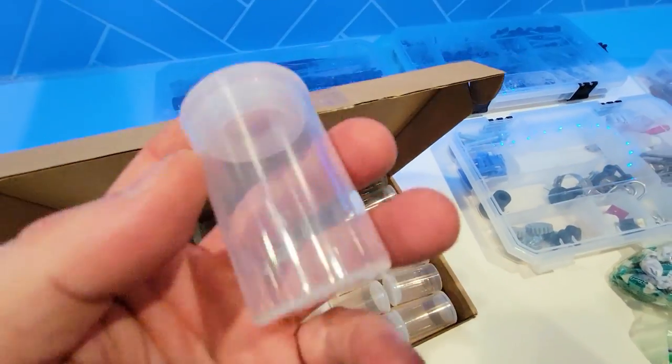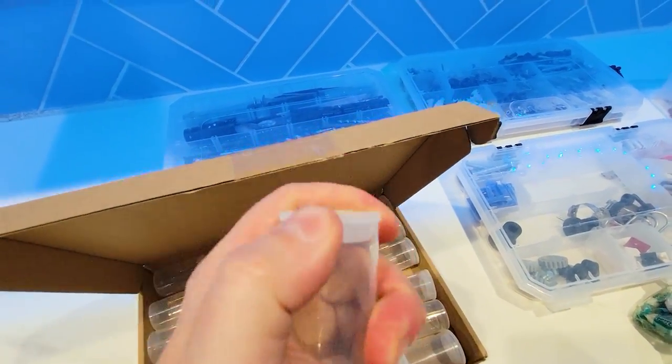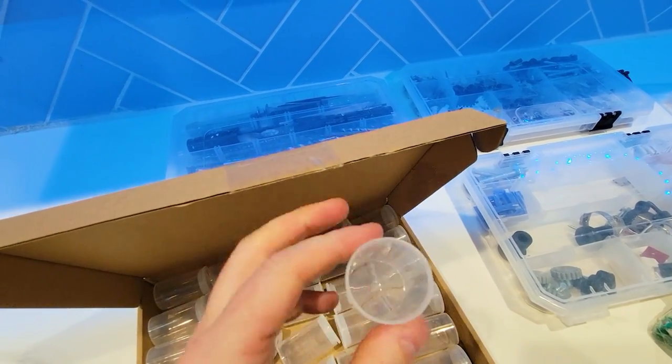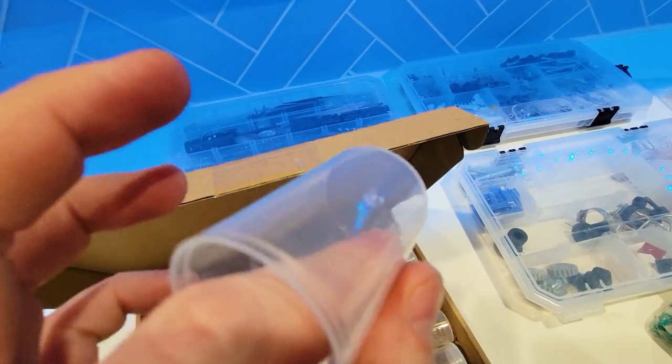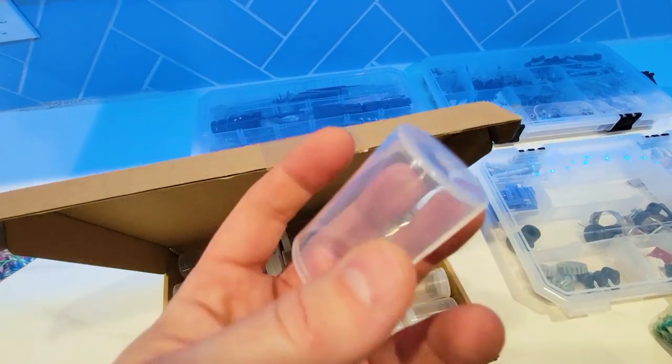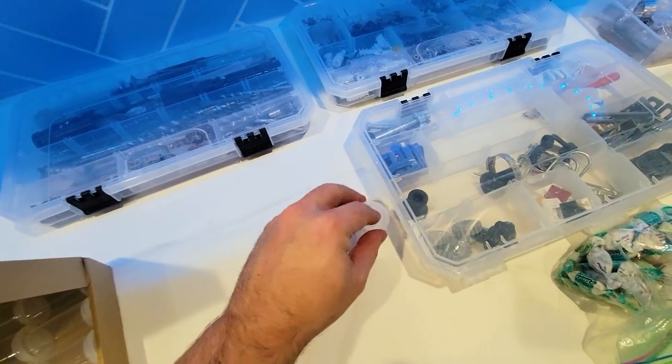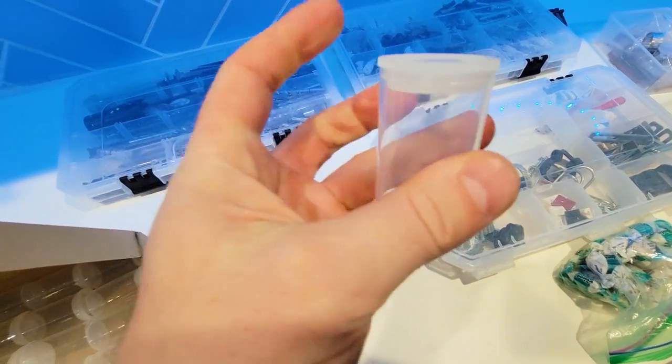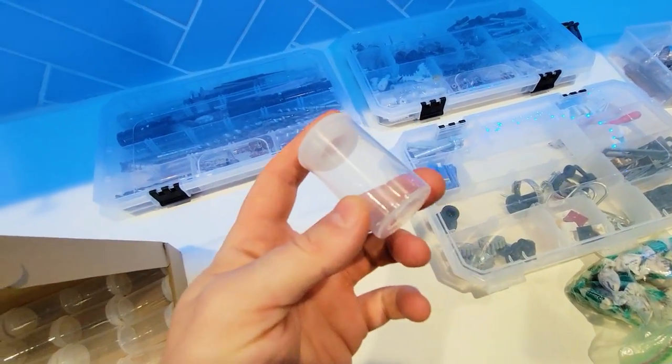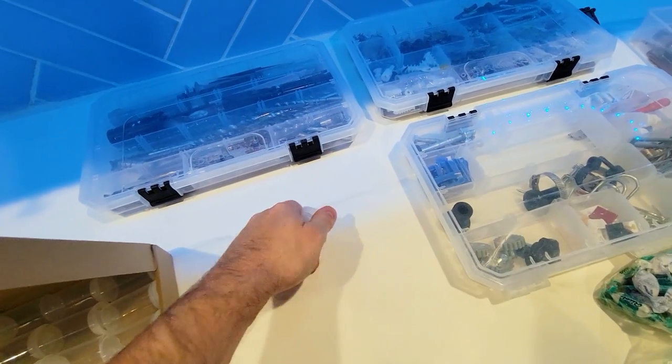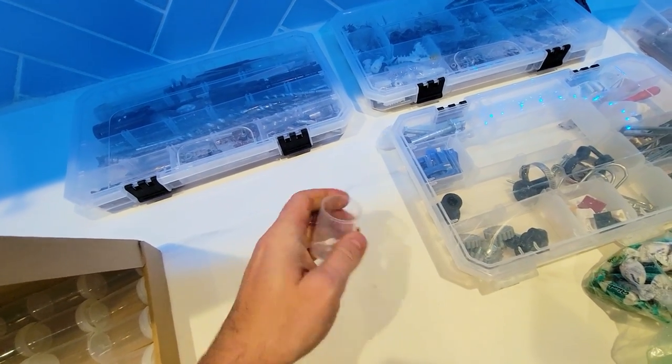Now these are old school film tubes. So if you guys remember film that was in the old school cameras, it would come with these little containers. They're see-through. And now you can buy them as little storage containers. They're great for travel and they're great for storing little things like medicine.